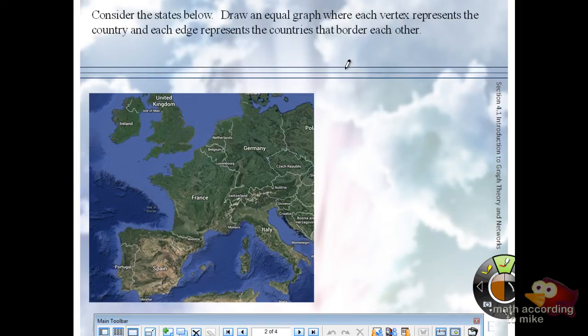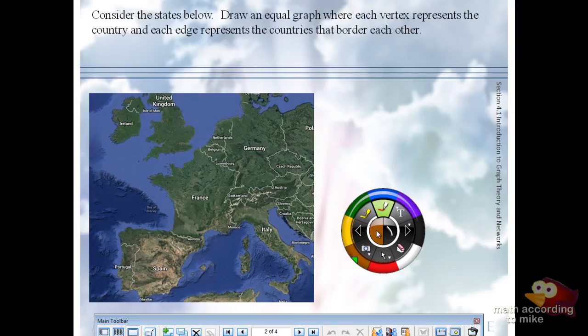All right. Let's pick some countries here. How about we'll do Portugal. We'll do Spain. We'll do France. What else do we want? Of course we're going to Italy. Germany. Good. Good. Well, we can't because it's not adjacent to anything. It's an island, unfortunately.